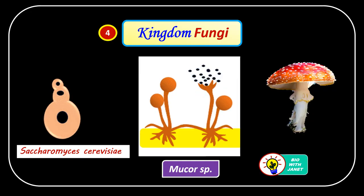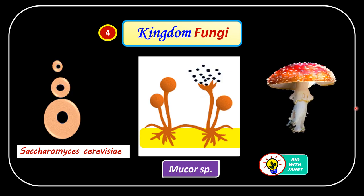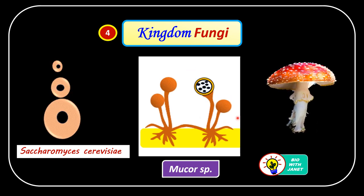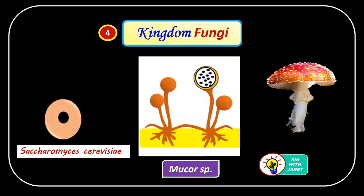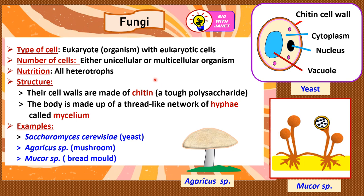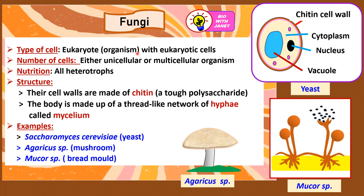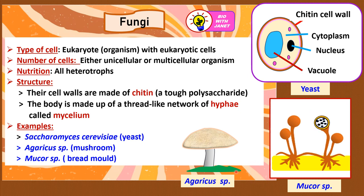Now let's go to Kingdom Fungi. The organisms here include yeast, bread mold, and mushrooms. What are the characteristics of fungi? Type of cell: they are all eukaryotes because they have membrane-bound nucleus and membrane-bound organelles — more advanced and complex than bacteria. Number of cells: either unicellular or multicellular. For example, yeast is unicellular, but Mucor species and Agaricus species, a type of mushroom, are multicellular.